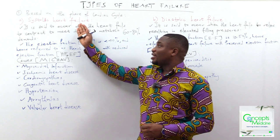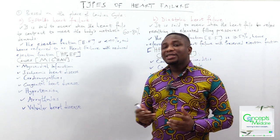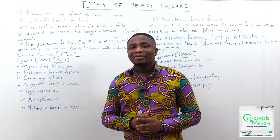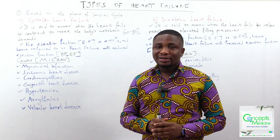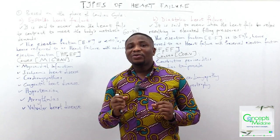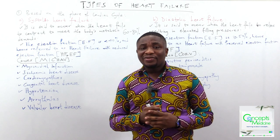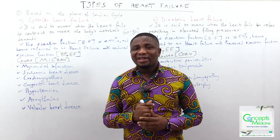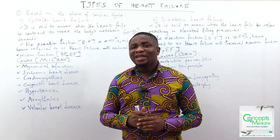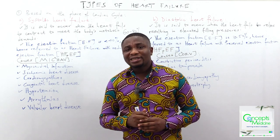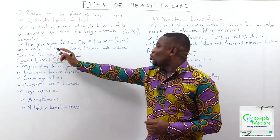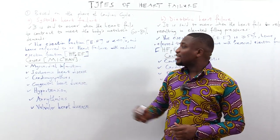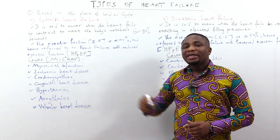We will start with systolic heart failure. Systolic heart failure is said to occur when the heart fails to contract to meet the body's metabolic demand. The ejection fraction is less than 40%, and because of that, systolic heart failure is referred to as heart failure with reduced ejection fraction, written as HFrEF.